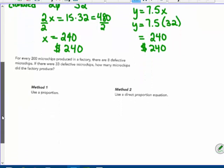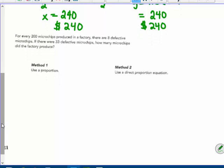Next question. For every two hundred microchips produced in a factory there are eight defective microchips. If there were thirty three defective microchips. How many microchips did the factory produce?